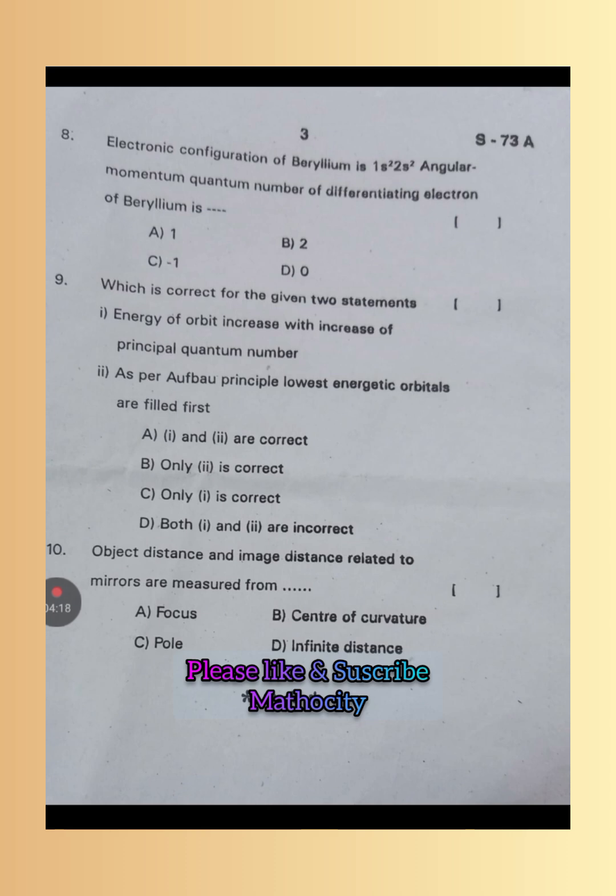Ninth one: Which is correct for the given two statements? Energy of orbit increases with increase of principle quantum number. As per Aufbau principle, lowest energy orbitals are filled first. Both are correct. As the value of principle quantum number increases, n value increases, the energy also increases. So statements 1 and 2 are correct. A is the right answer.